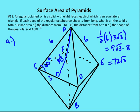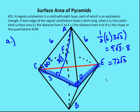Next, they ask us to find the distance from C to E — this distance across the octahedron. The intersection of C, D, E, and F forms a square, and all those lengths are the same. We have a right triangle defined by C, E, and D, with CD equal to six and DE equal to six. So the hypotenuse CE is six root two.